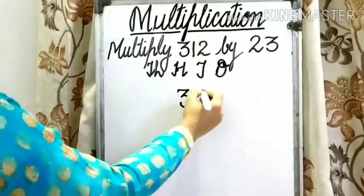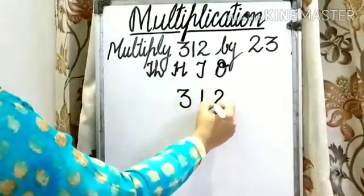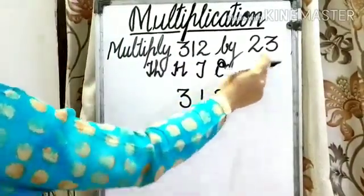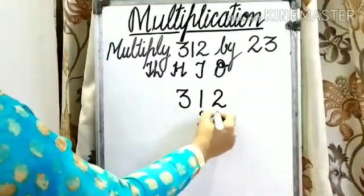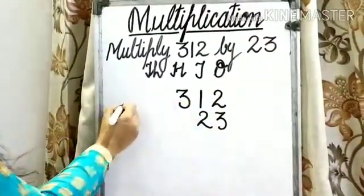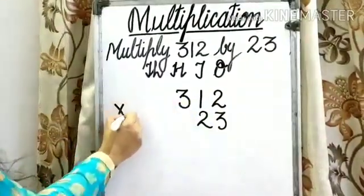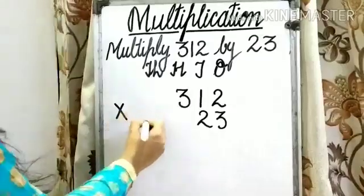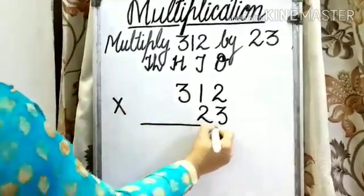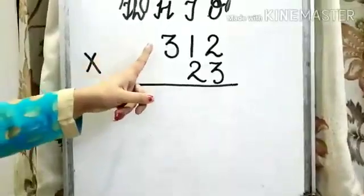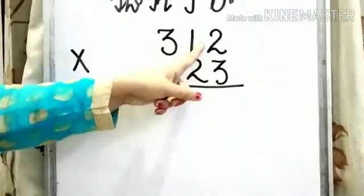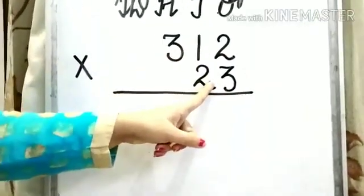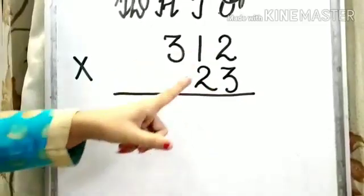Now write 312 multiplied by 23 and put the symbol of multiplication here. Step 1: we have to multiply 312 by 3. Let's start.